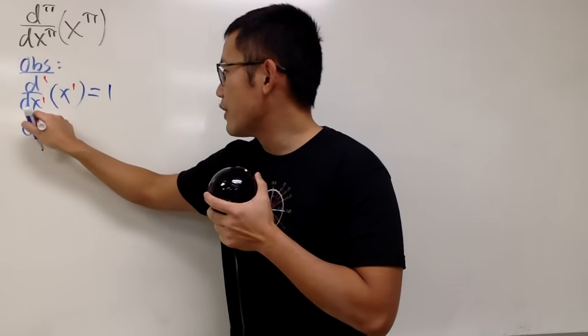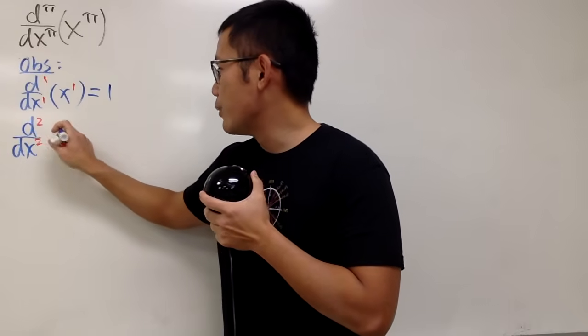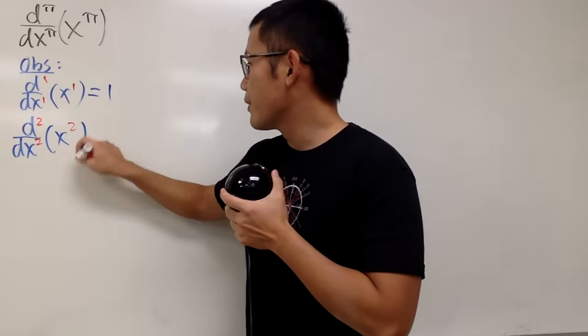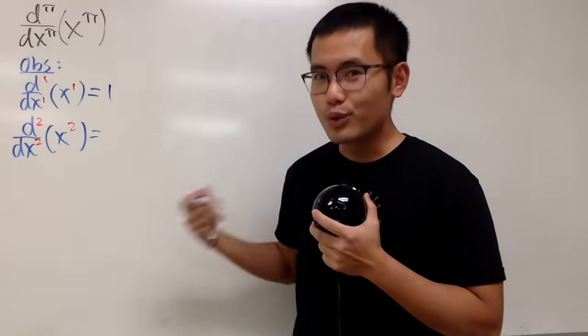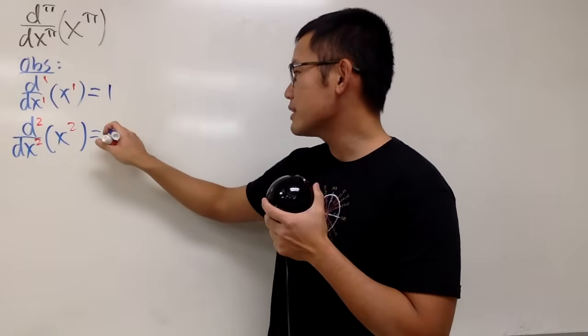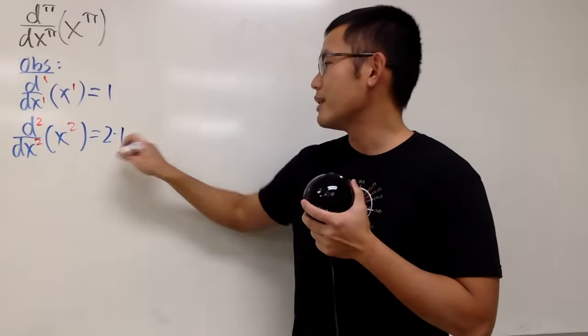Now, let's see, if we have d²/dx², and we have x squared, this one right here, we just do it twice, right? Differentiate x squared twice, we get 2. And let me write the 2 as 2 times 1, like this.